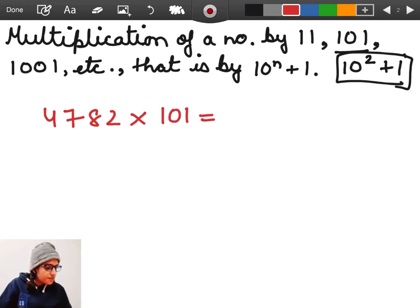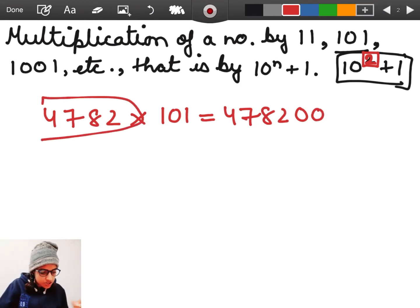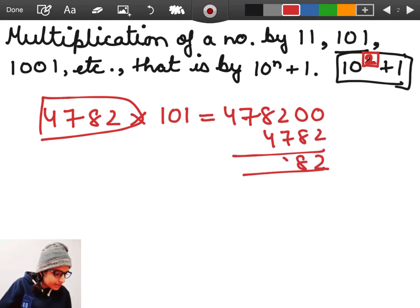So what will we do? We will see here 101 is 10 raised to the power 2. So we have to focus on this power. It is 2. So we will add two zeros after this number and we have to add this original number to this new number. 2, 8, 9, 2, 8, 4 and that's the result.